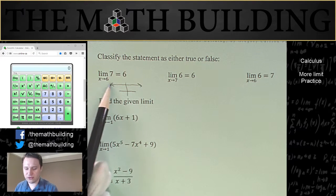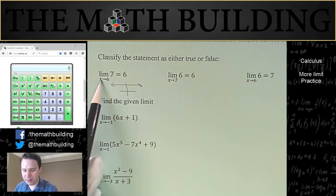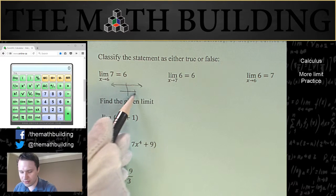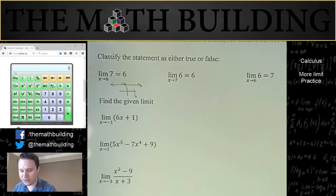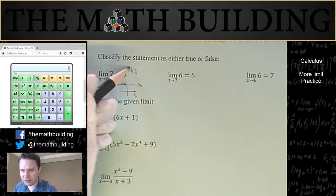Okay, so this graph is 7 everywhere, so is the limit as x approaches 6? Is that equal to 6? No, it's equal to 7. So this first statement is not true.